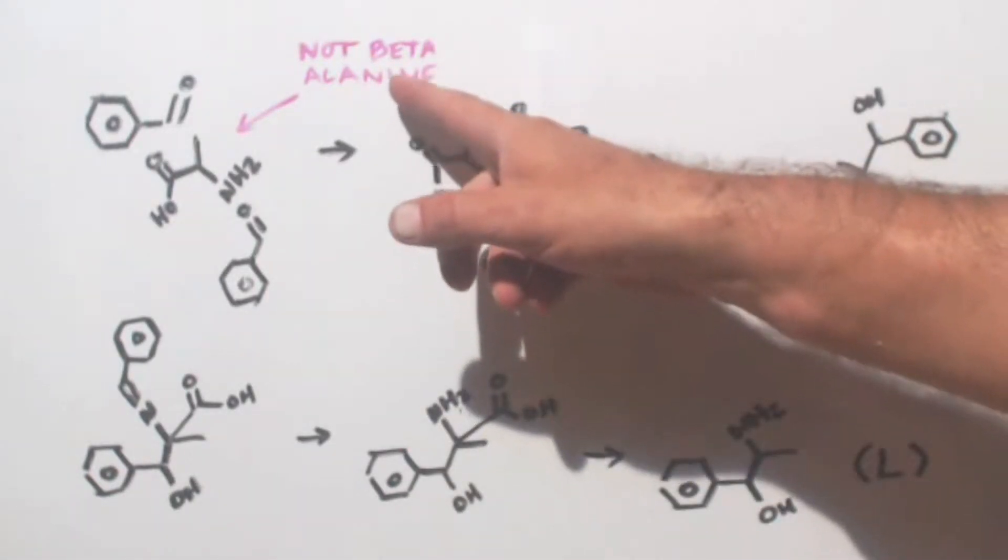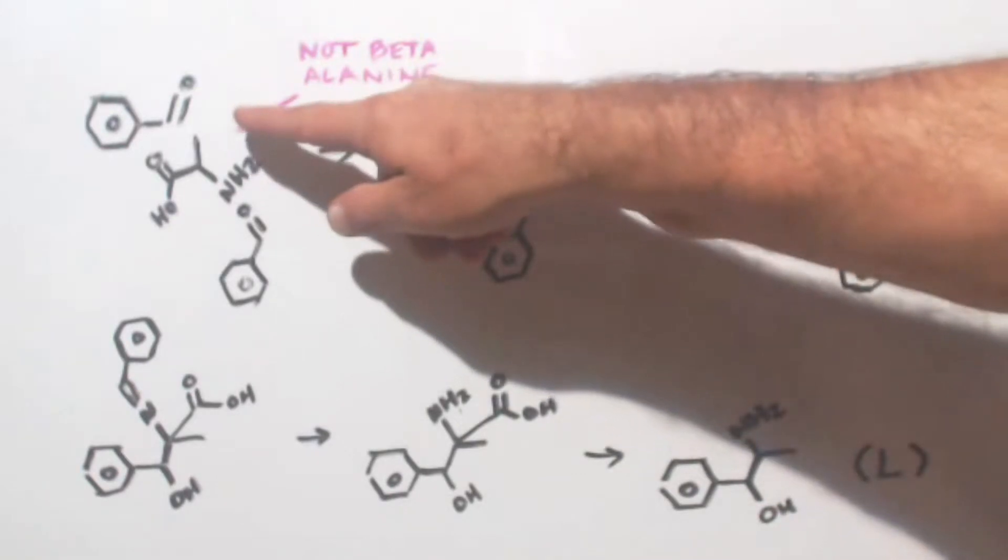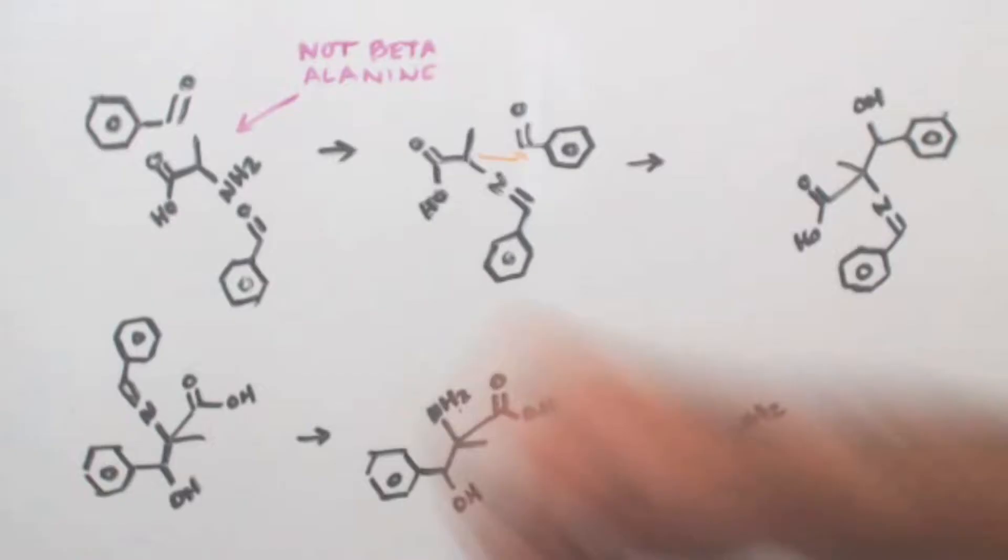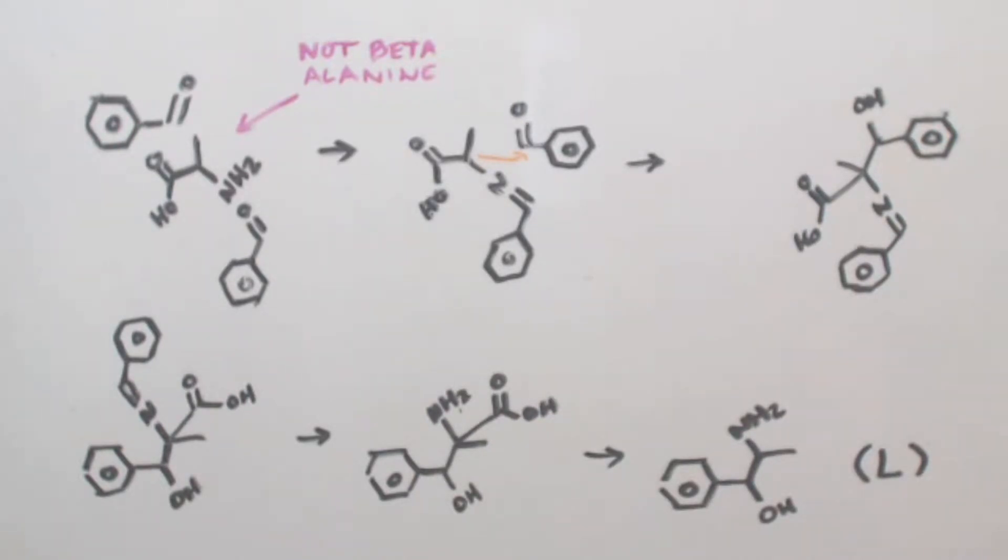Now you don't want the beta alanine. Beta alanine means the amine group is on the last carbon there. We want alpha which is regular. You'll know because it'll either be called beta alanine or it'll be called L-alanine, L meaning the L isomer of it. You can't really buy it in the stores anymore. You'd have to buy it online.